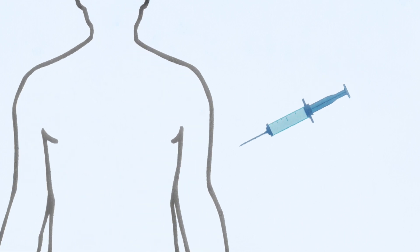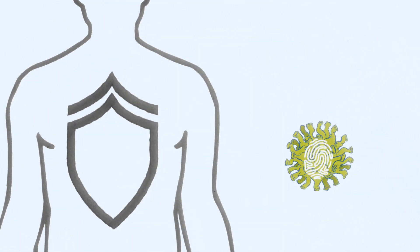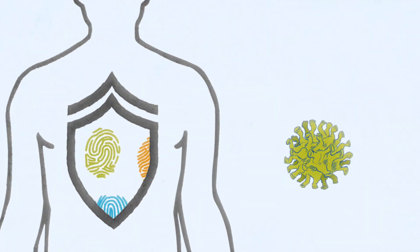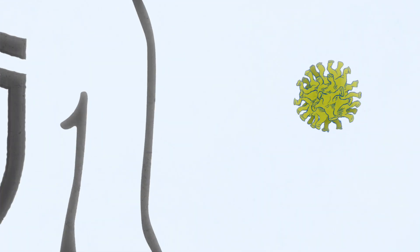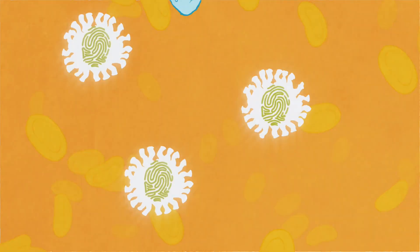The power of vaccines comes from our body's immune system. Vaccines work by creating a fingerprint database of foreign invaders for our immune system, so they can be quickly matched and destroyed if ever encountered.